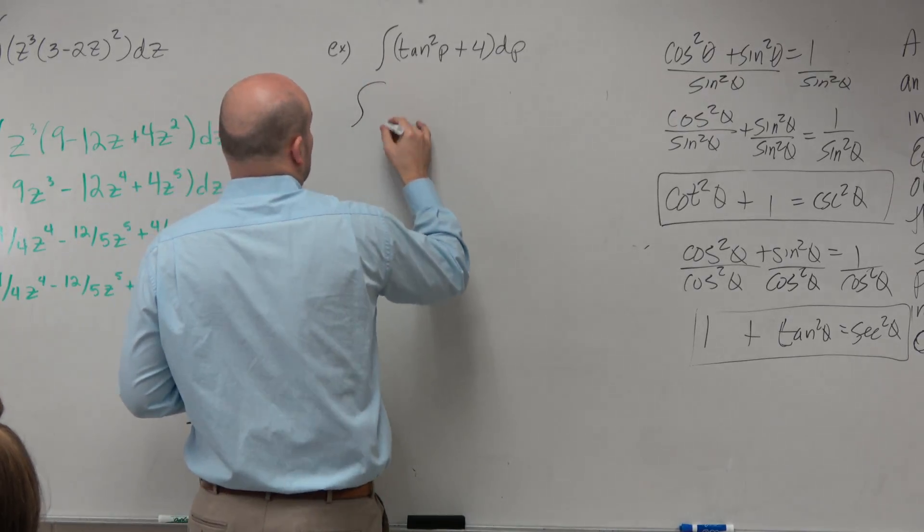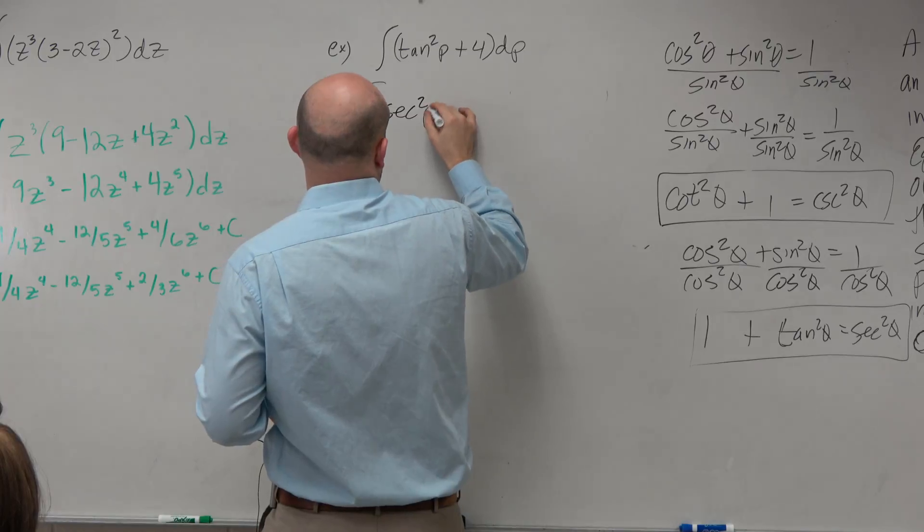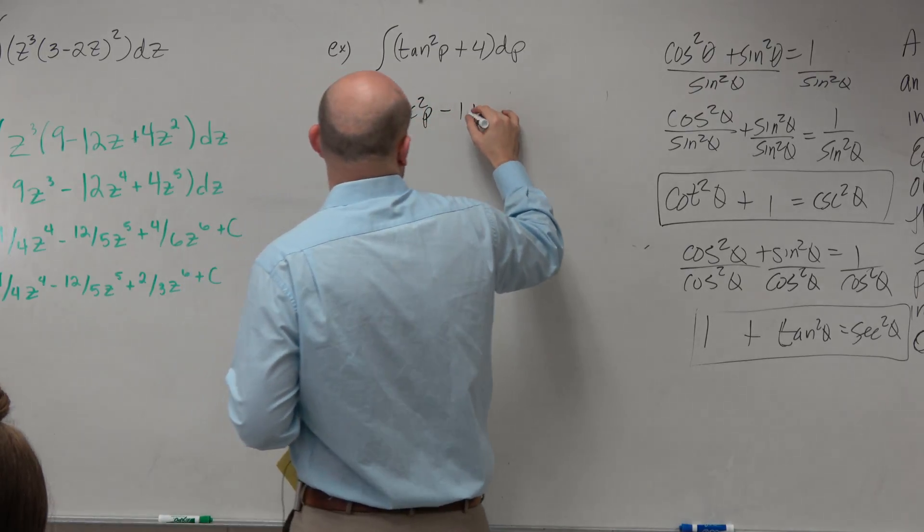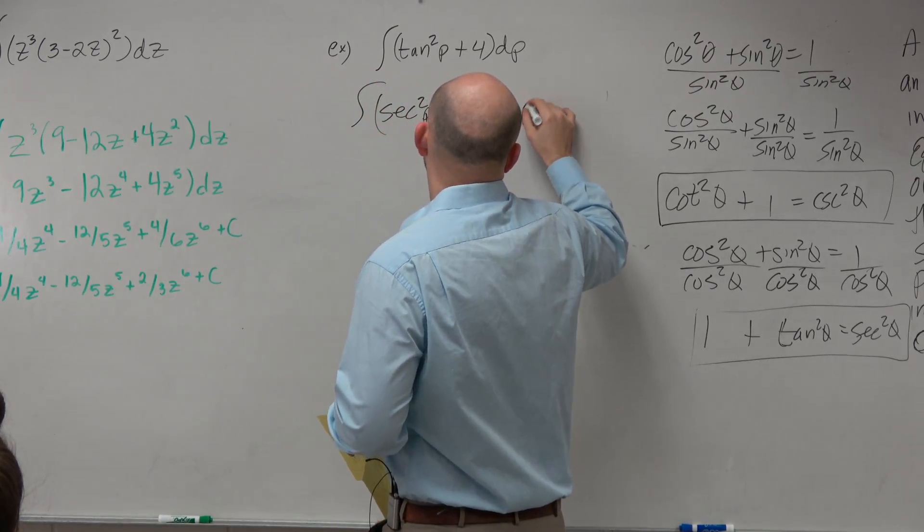So therefore, I can rewrite this as secant squared of p minus 1 plus 4 dp.